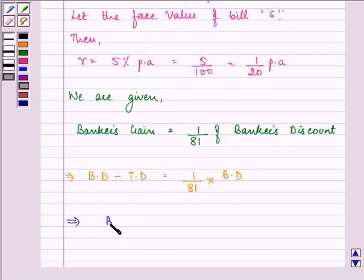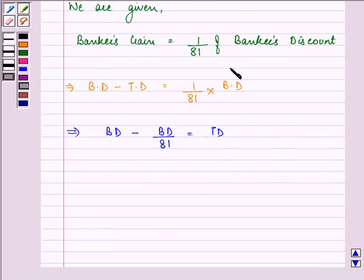This can be further written as bankers discount minus bankers discount upon 81 is equal to true discount. We have just rearranged the given equation. That on taking the LCM we have 80 upon 81 bankers discount is equal to true discount. Let this be equation number one.